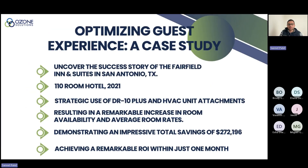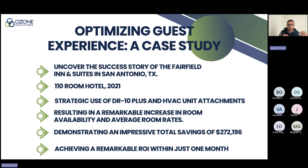I'll provide a case study we did at a Fairfield Inn and Suites in San Antonio, Texas — about 110 rooms in 2021 when COVID was at its highest. We used a dual strategy: the DR10 Plus unit and an HVAC unit. Those two units provide dual sanitization in the room — not just a shock treatment, but longevity over time even when people are in the room. The result is you're able to turn rooms over faster with no downtime.